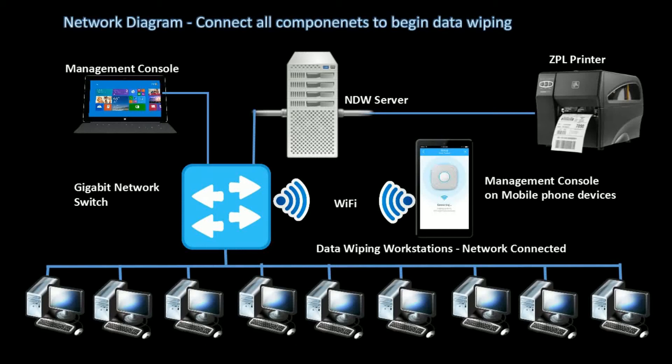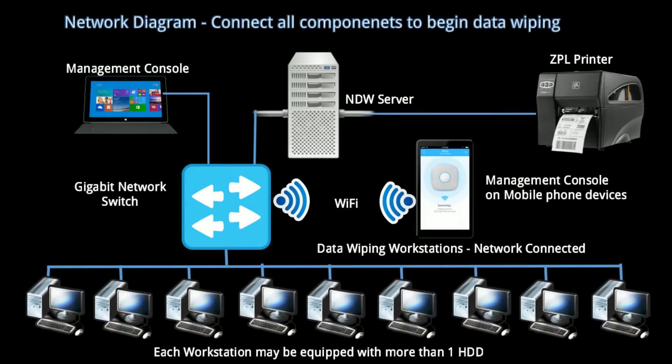We will show you an example in the next video. Now we have finished installing NDW software and we are ready to begin data wiping. Before we begin, we have to make sure that all the components are connected correctly. Follow this diagram and make sure all the computers are connected through the network. The gigabit network switch has been connected as well.